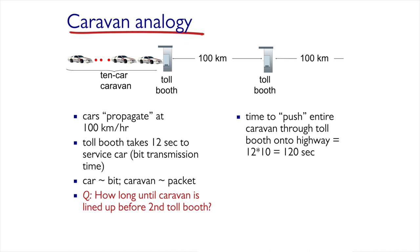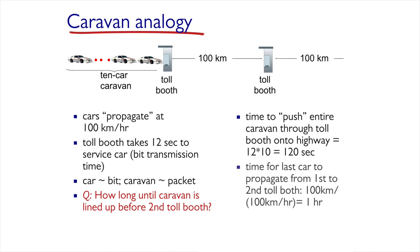This is the total time it takes to process all the cars, and at this stage the last car is on its way towards the second toll booth. We add to this the time it takes the last car to reach the second toll booth, which is the distance divided by the speed — 100 km divided by 100 km per hour — giving us another 60 minutes. For the total, we add the two numbers and get 62 minutes. Note that we added only the propagation time of the last car, because during this time the cars that left first already arrived.